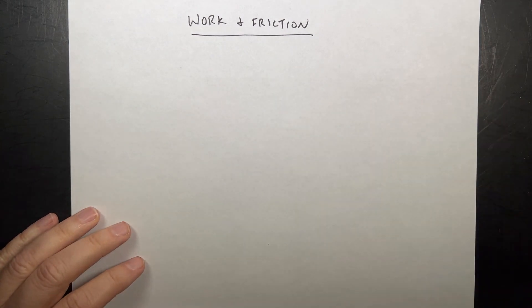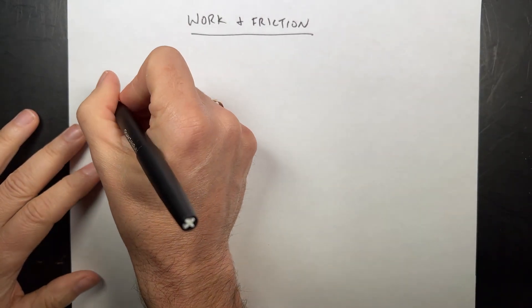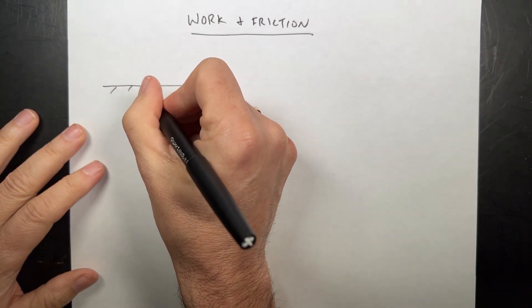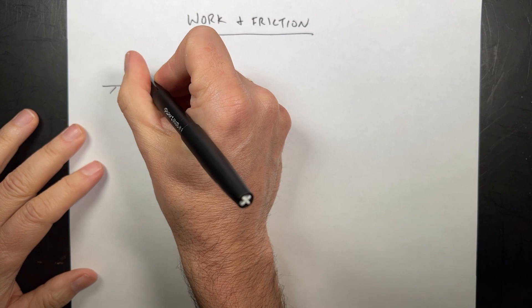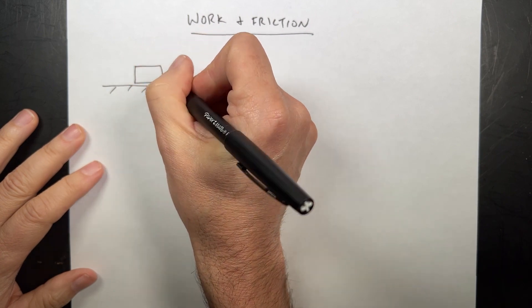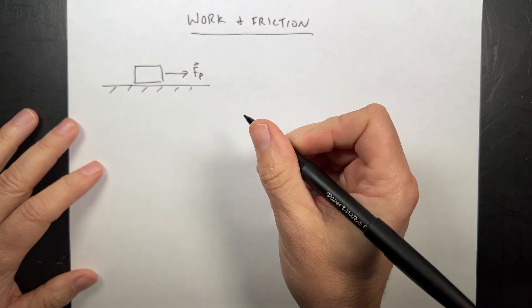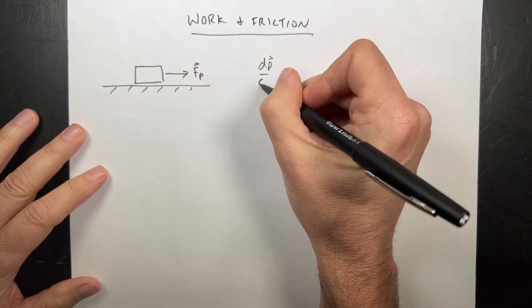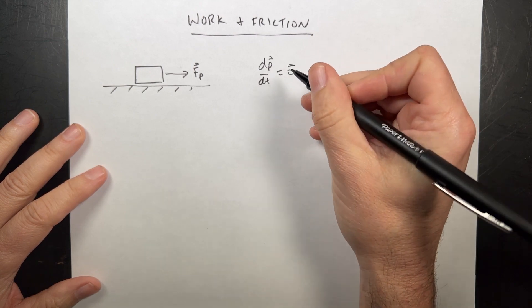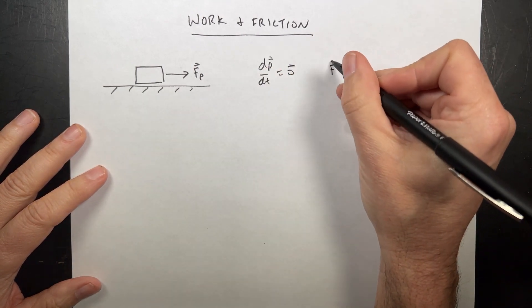Let's consider this block. I'm gonna draw the block right here. Here's the ground. Here's the block and then I'm gonna have a force. I'm gonna call this Fp. I'm pushing it and I know dp/dt, the change in momentum, is zero. That means that Fnet has to be zero.